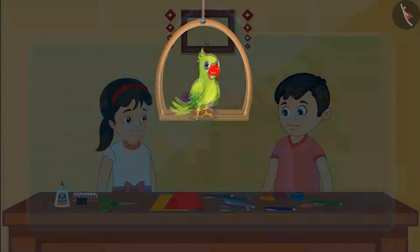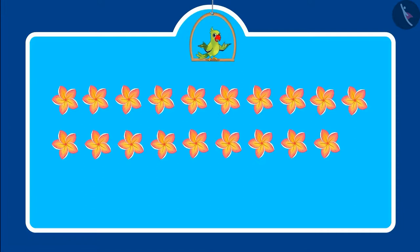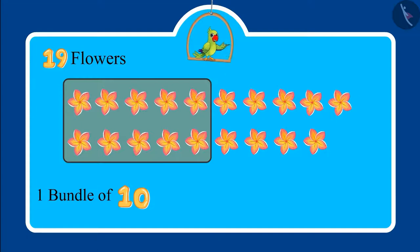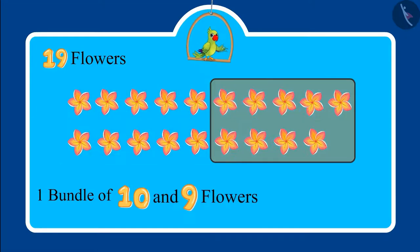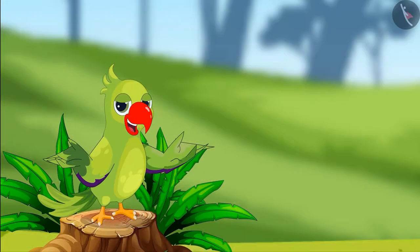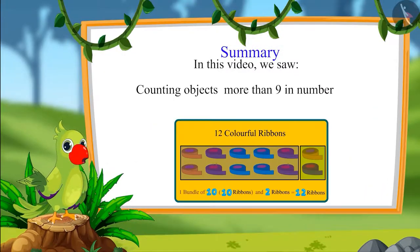Come on, let's look at another example. These are some flowers — the number of these flowers is written below them. Can you identify and tell me this number? Yes — this is one bundle of 10 flowers and nine more flowers, that means in total 19 flowers. Very good children!